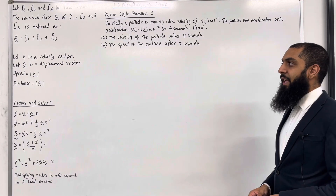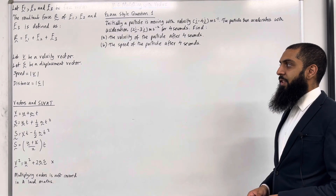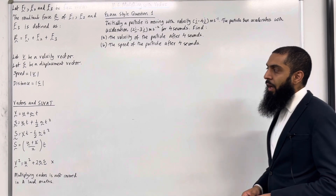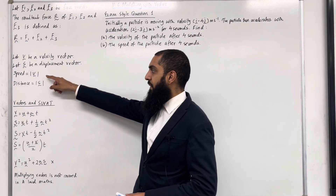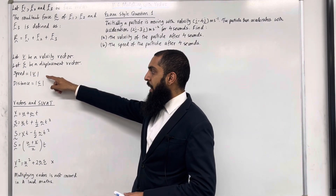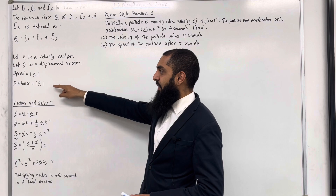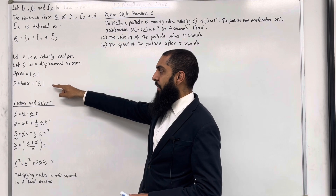Let V be a velocity vector and let S be a displacement vector. The speed is given by the magnitude of the velocity vector. The distance is given by the magnitude of the displacement vector.